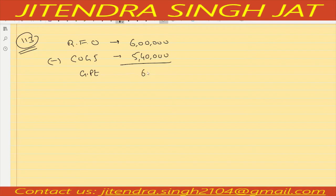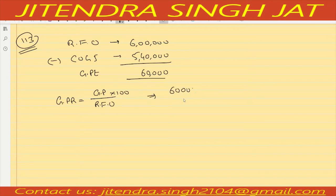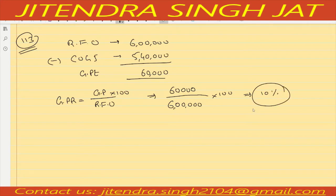The formula of gross profit ratio is Gross Profit into 100 upon Revenue from Operations. So it will be sixty thousand divided by six lakh, multiplied by 100, which gives us ten percent. The capacity of the business to earn gross profit is ten percent. Profitability ratios are expressed in terms of percentage.